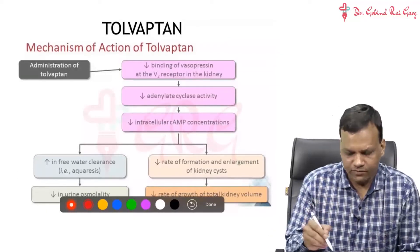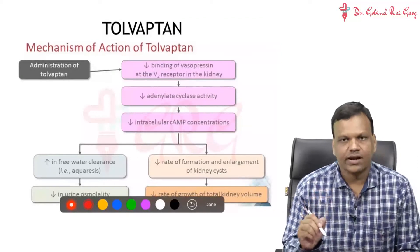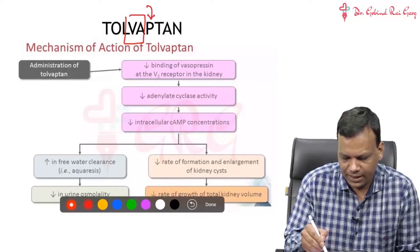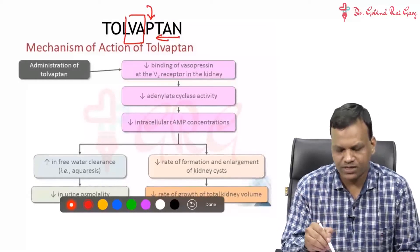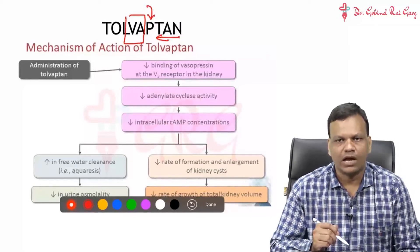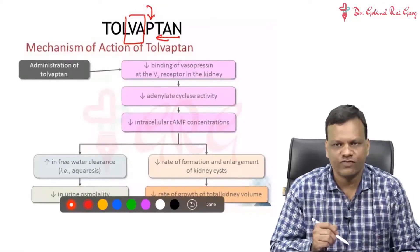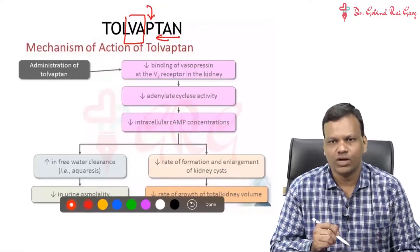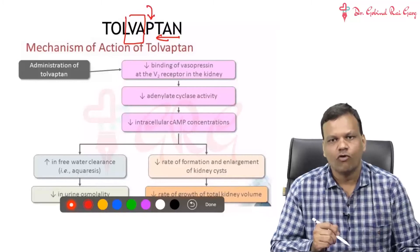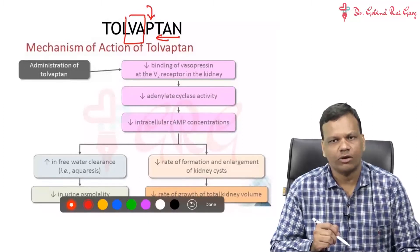Tolvaptan, as we already discussed in our lectures, is a vasopressin receptor antagonist — VA means vaso, P means pressin, ANT means antagonist. We know the function of vasopressin is anti-diuretic, meaning it retains water. So when we block this receptor, water cannot be retained.